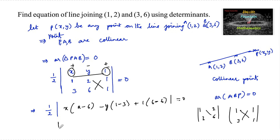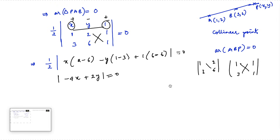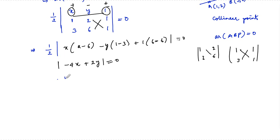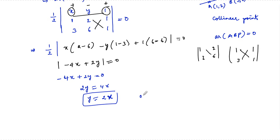This gives: (2 minus 6) = negative 4, so we have negative 4x; minus of (1 minus 3) = minus of negative 2, so plus 2y; and (6 minus 6) = 0. So the expression becomes negative 4x plus 2y equals 0. Simplifying: 2y equals 4x, so y equals 2x.